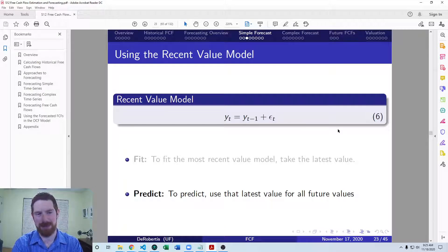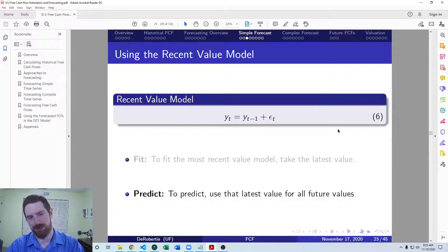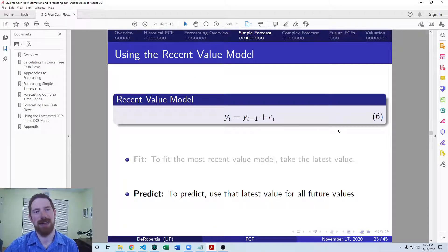This is applicable in mostly the same settings as the historical average model. If the data does not have a defined trend up or downward then this can make sense. But in contrast to the historical average, this is where you think whatever it was most recently is going to be a better estimate for where it's going to be in the future. In other words, there's not any kind of mean reversion in this data, so whatever we had most recently is the best estimate.